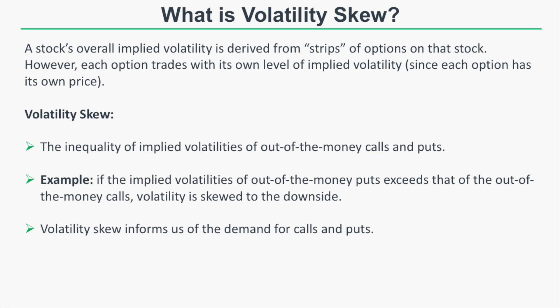Volatility skew refers to the inequality of implied volatilities for out-of-the-money calls and out-of-the-money puts. For example, if the implied volatilities of out-of-the-money puts exceeds that of the out-of-the-money calls, then volatility is said to be skewed to the downside, because the out-of-the-money puts are trading at prices more expensive than the out-of-the-money calls at similar distances from the stock price. Volatility skew informs us of the relative demand between calls and puts.